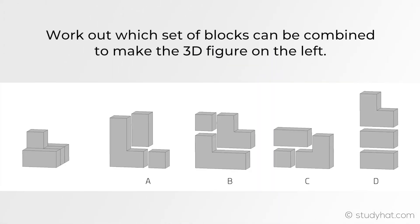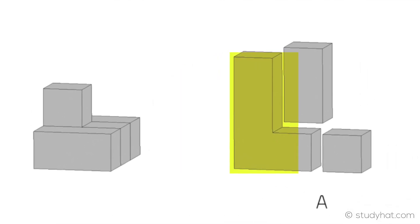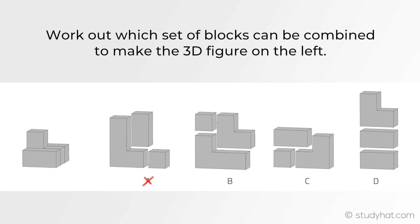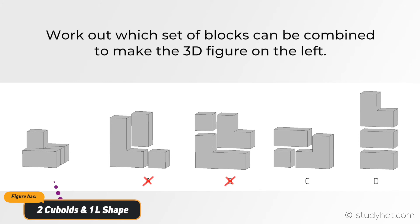Going back to the question, let's start by eliminating any answers that have incorrect shapes. Straight away I can see that A has an L shape which does not appear in the figure on the left, so we can cross that off. B has an extra figure which doesn't appear in the figure either. The figure has what looks like two cuboids and one L shape. C can't be correct since this shape is longer than it needs to be.